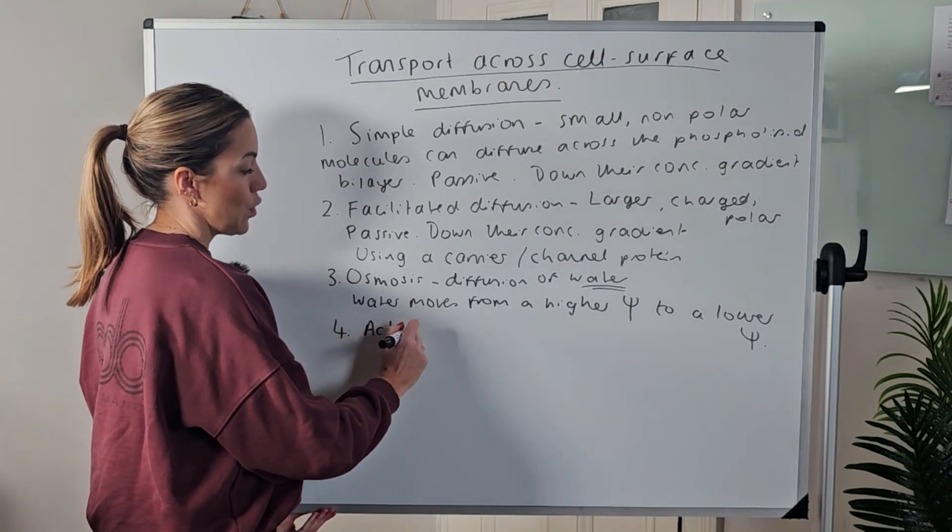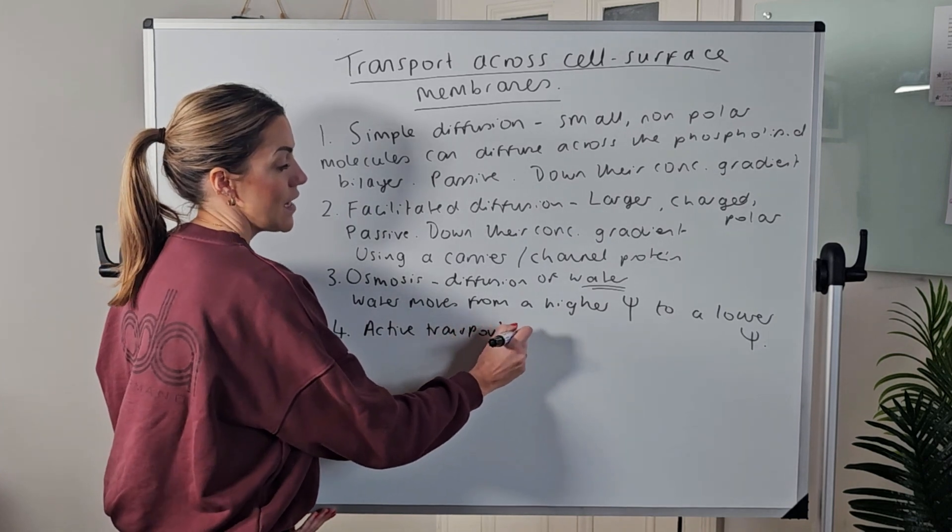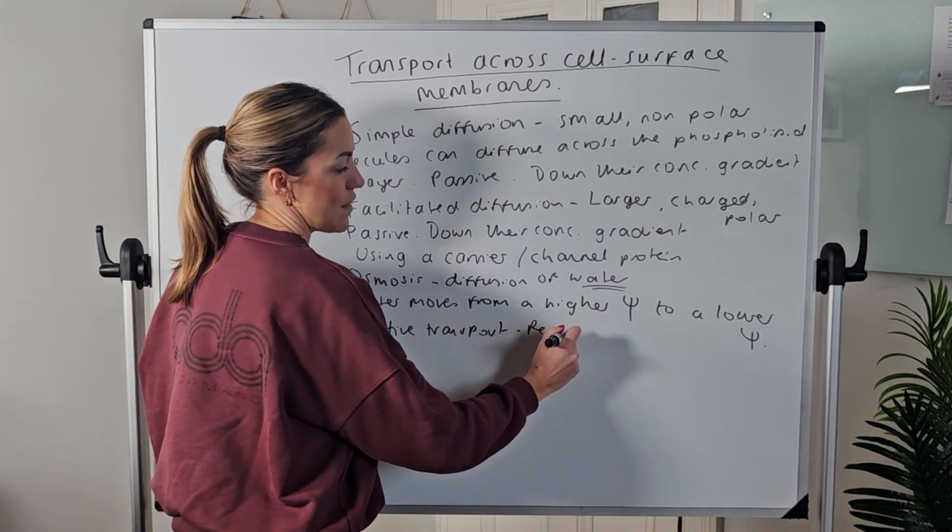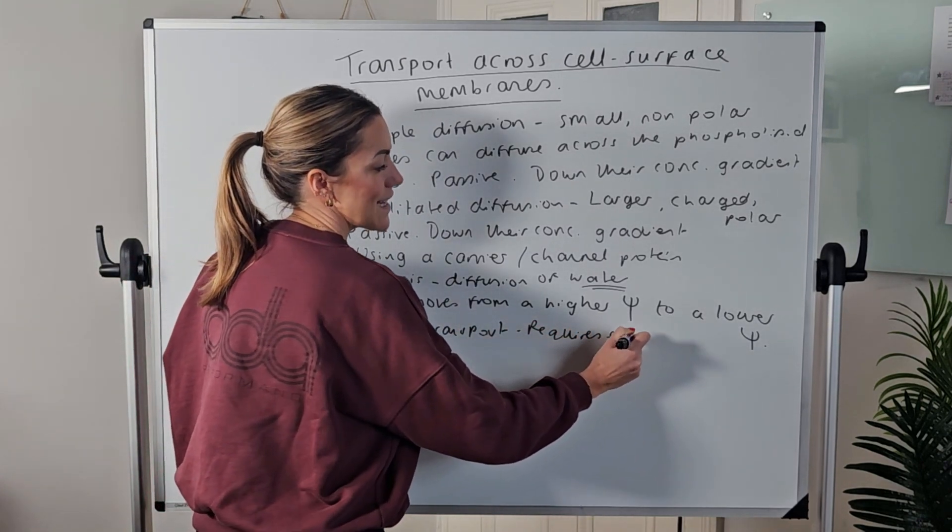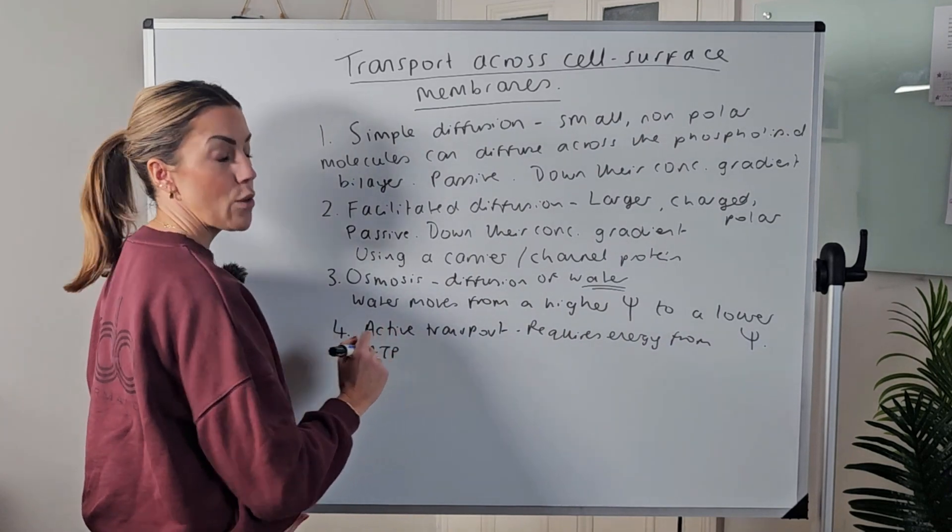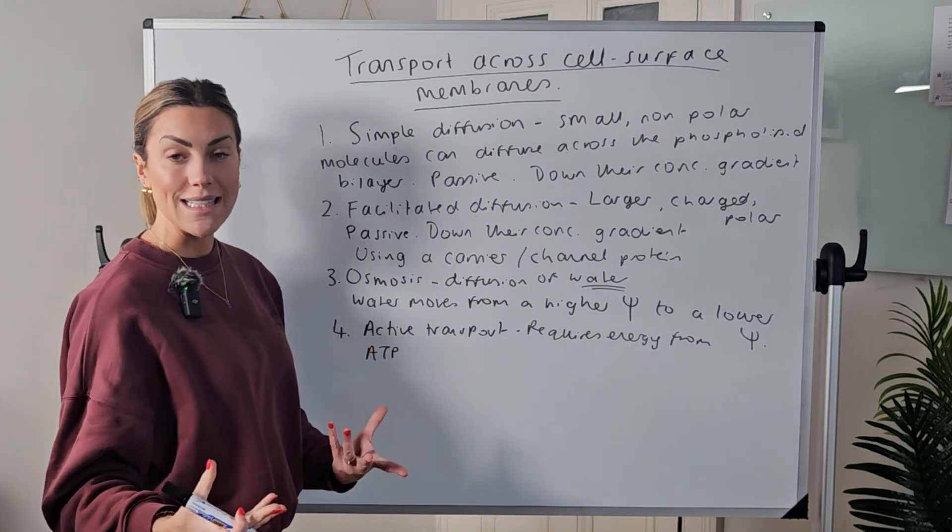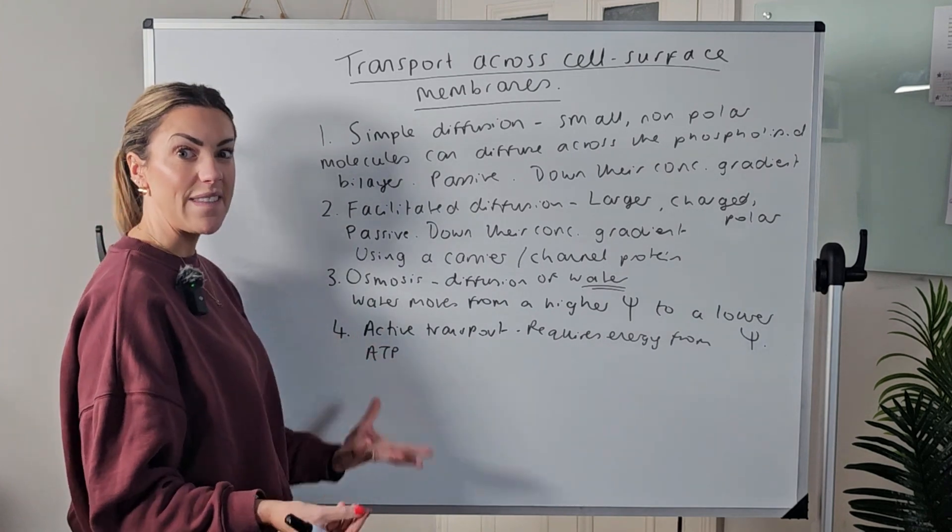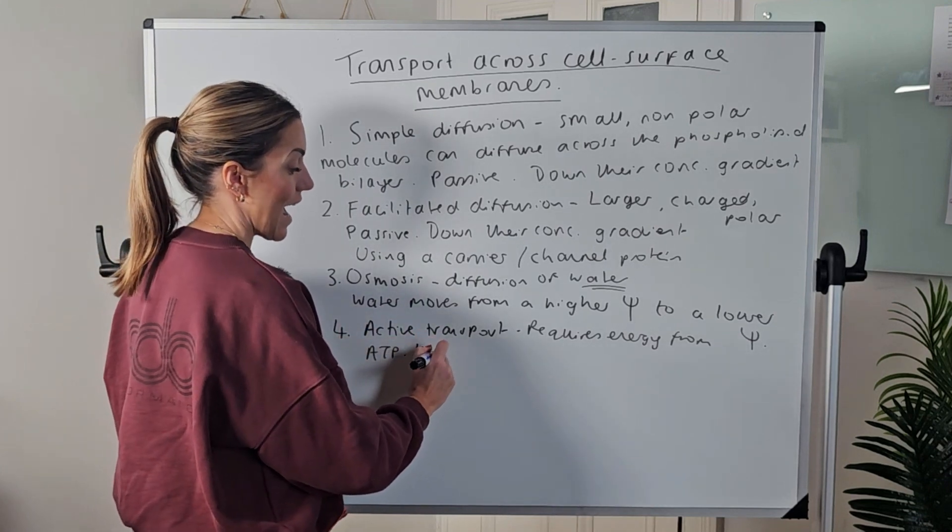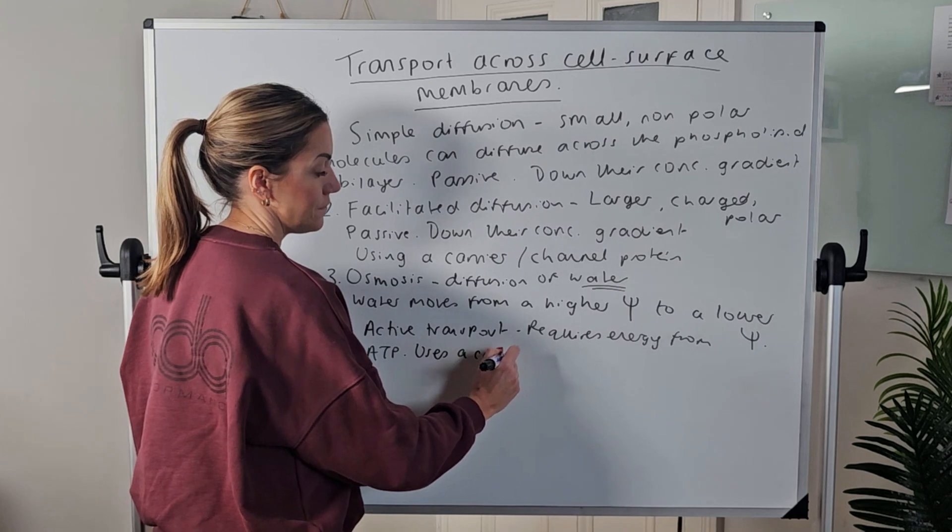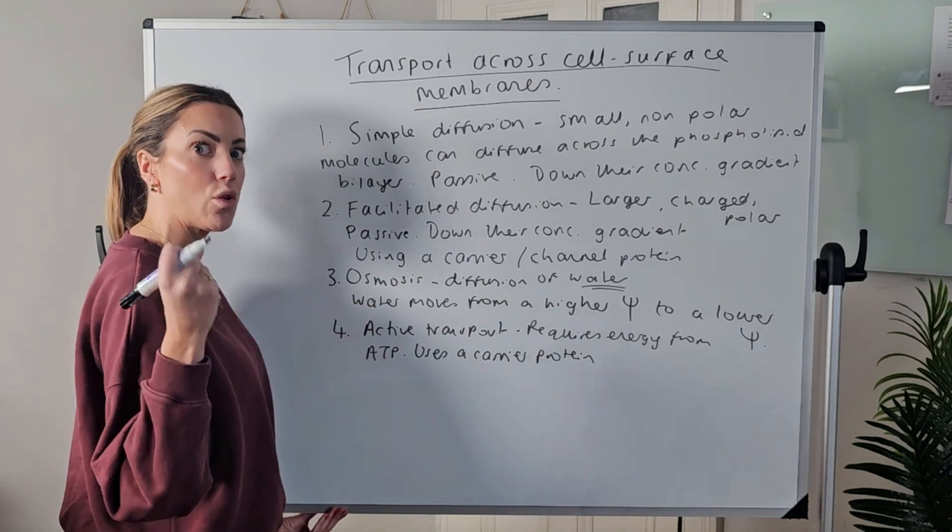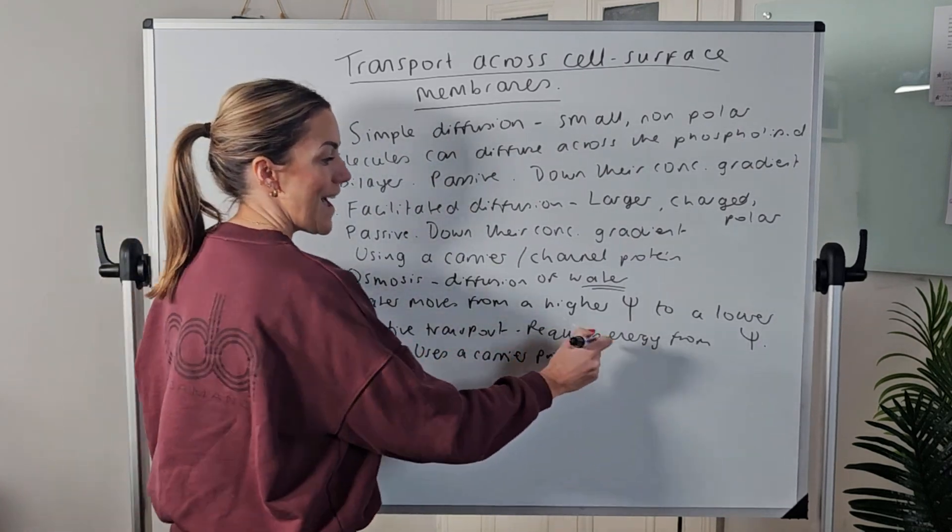Number four, we've got active transport - another one you did at GCSE. Now the thing with active transport is it does require energy. So I'll start with that - it requires energy from ATP. So cells that do a lot of active transport will have a lot of mitochondria to produce a lot of ATP to provide the energy for active transport.